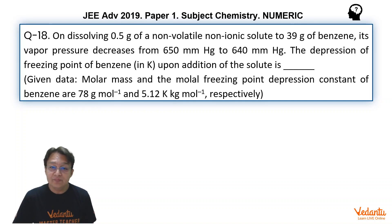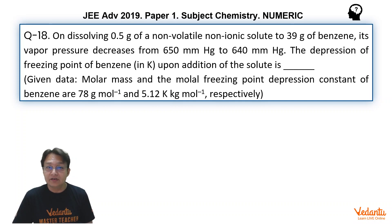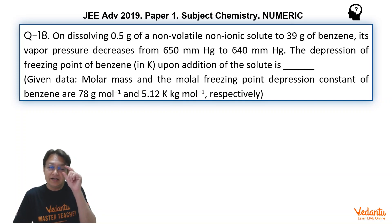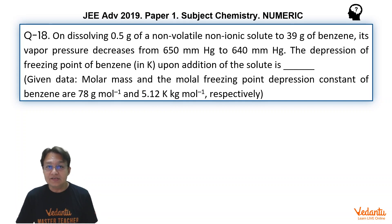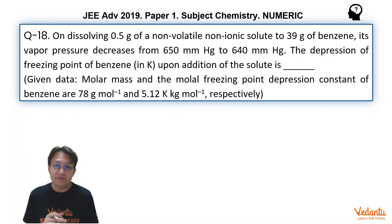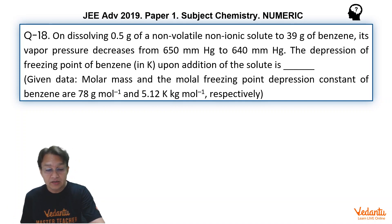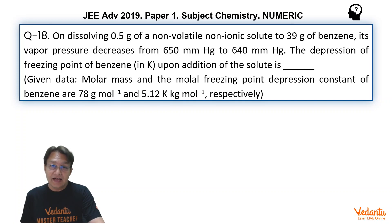The depression in freezing point of benzene upon addition of the solute is asked. So they are giving the information of relative lowering of vapour pressure and asking for delta Tf. This problem is going to relate two subtopics — relative lowering of vapour pressure and the depression in freezing point — into one single problem. Let's start solving.